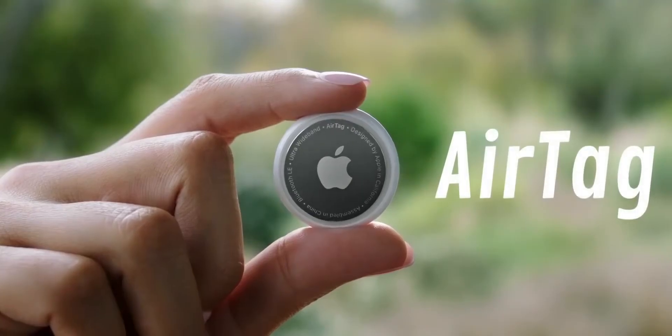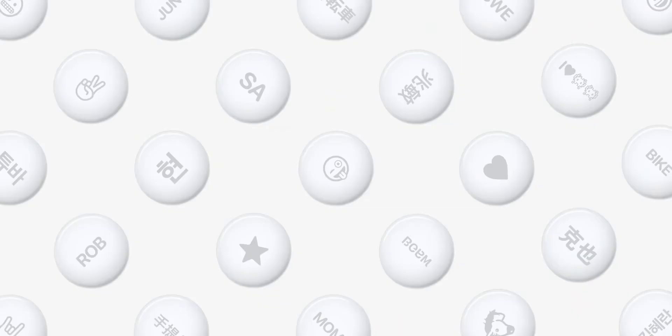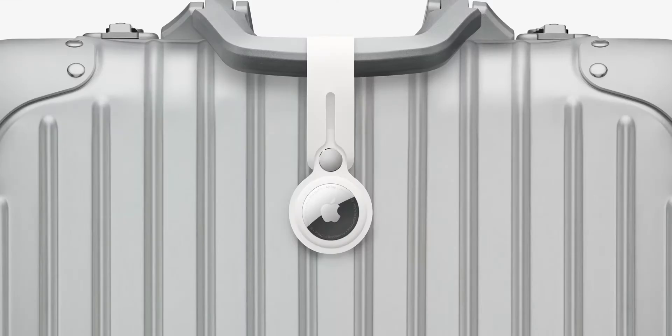First, Apple has launched all new AirTags which is a small coin size tag that you can track on any other things. And this is through Bluetooth and Ultra Wideband technology, which basically you can tell your phone where this product is.